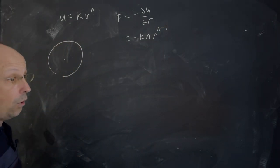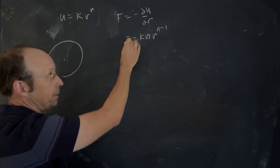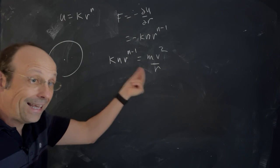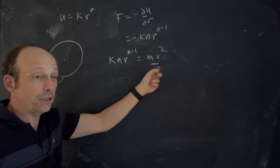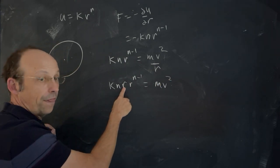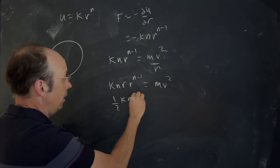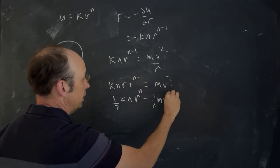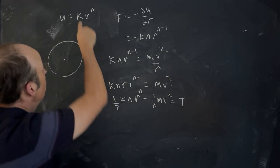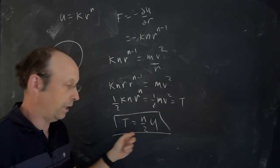It's moving in a circle, so the force equals the centripetal acceleration times the mass. K n r to the n minus 1 equals m v squared over r. I want to get this to look like the kinetic energy. Multiply both sides by r: k n r to the n equals m v squared. Now multiply both sides by a half: one half k n r to the n equals one half m v squared, which is the kinetic energy.